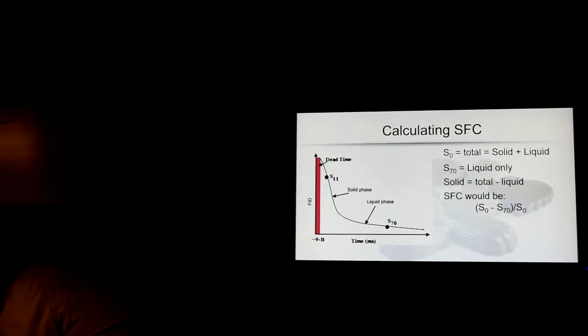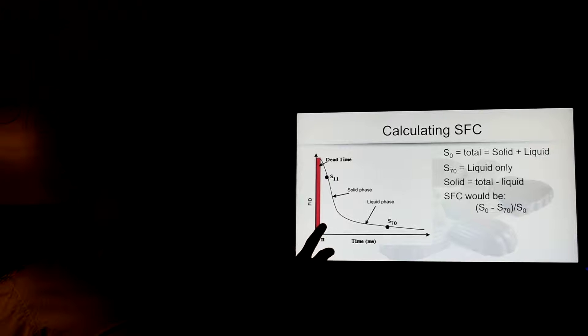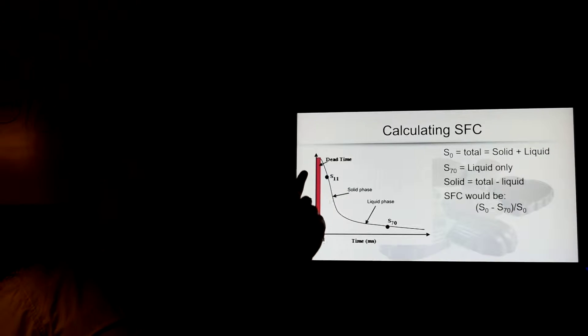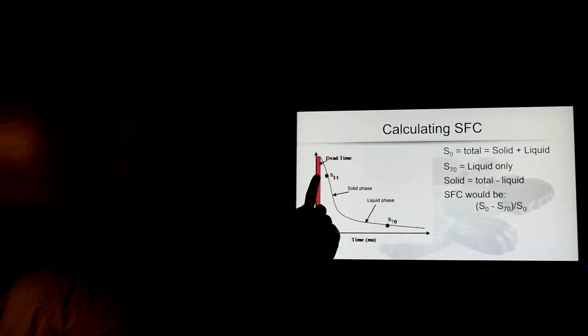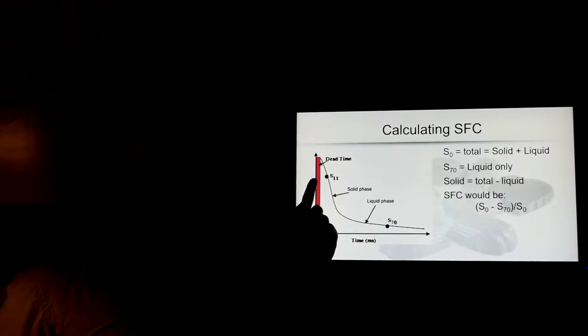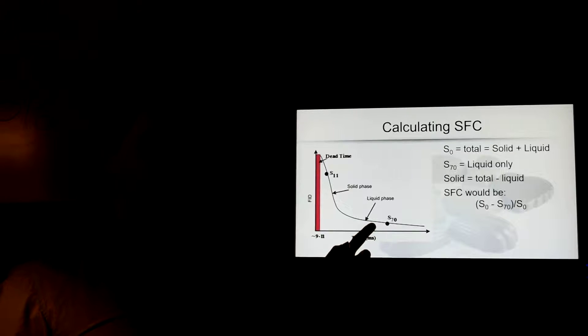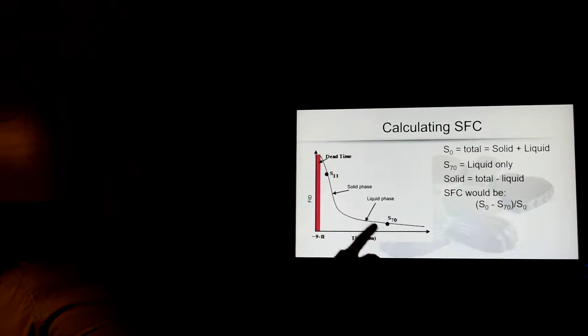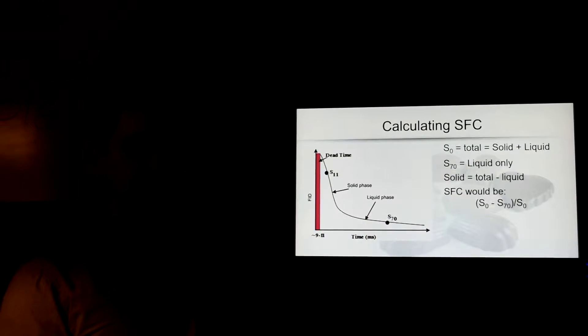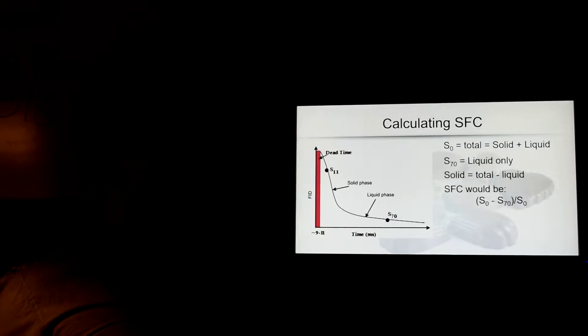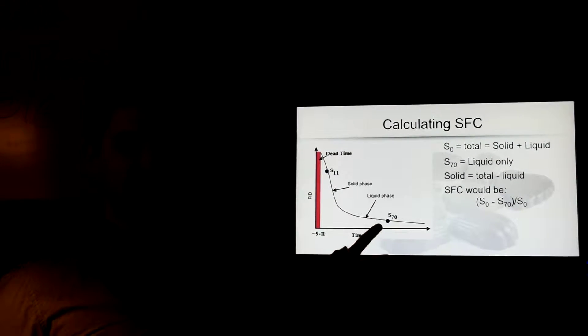So if we look at a signal for a second, we can see at the very beginning times there, we have the whole thing, the total of solids and liquids. You can't measure gas, that's the total. And over here, at about 70 milliseconds, you have only the liquids. So we're uncertain if it's exactly 70, sometimes it's 65, sometimes it's 75, so we add a correction factor and simply multiply that number by a constant.